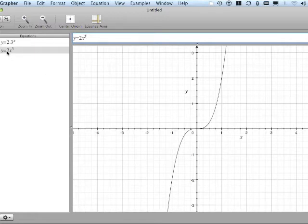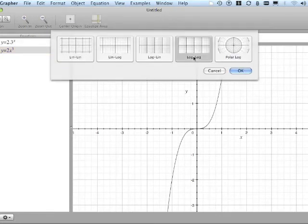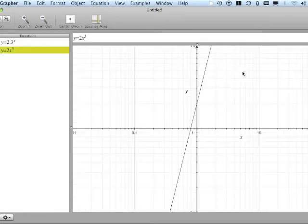So with this equation being the only one selected, I'm going to go Format, Coordinate System, and change to log-log. And of course, it did straighten itself out. So this is the log of the original x graphed with the log of the y value.